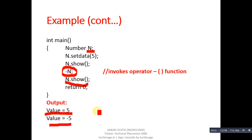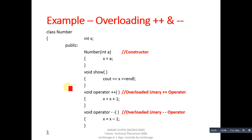With unary operator overloading, we can apply any operation on user-defined objects and perform that operation using the overloaded function. This next example is based on the ++ and -- operations.